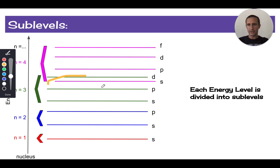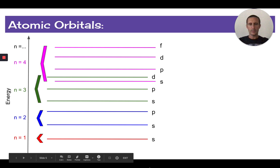The 4S sublevel is actually lower in energy compared to the 3D. So those energy levels actually start to overlap where one sublevel might be a lower energy than another sublevel of even a different energy level. So that overlapping does become important as we're learning about these electron structure.